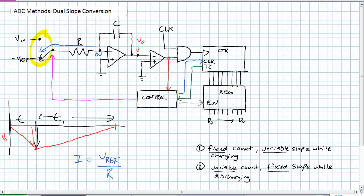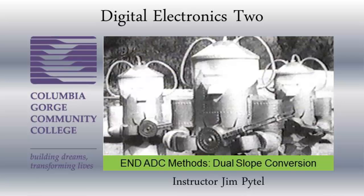The whole time, the comparator output is high because V-O is still negative, so the clock is still going and the counter is counting up — measuring T1. As V-O approaches zero, it's still lower than zero, still lower than zero — finally it equals zero. At that point the counter stops counting, the clock turns off, and the control enables the register, takes that final count value, and sends it to the digital output. A million extra points for the dual slope conversion — especially cunning how it does this. Not a lot of hardware. This concludes our brief discussion about the analog-to-digital conversion method known as dual slope conversion.